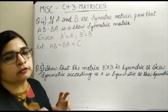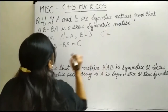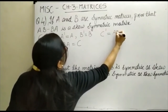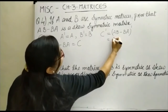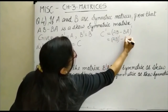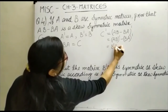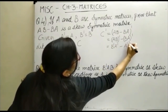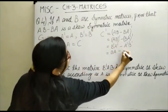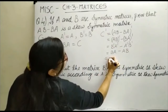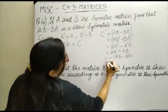We have to show that C transpose equals minus C. So C transpose equals the transpose of (AB minus BA), which equals AB transpose minus BA transpose. By the reversible law of the product, this becomes B transpose A transpose minus A transpose B transpose. Now replacing: B transpose equals B and A transpose equals A, so this gives BA minus AB, which equals minus(AB minus BA), which is minus C.